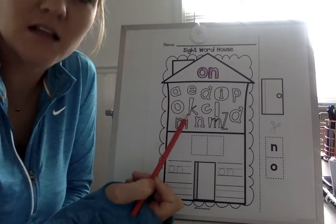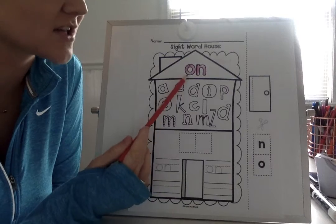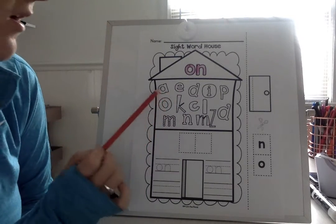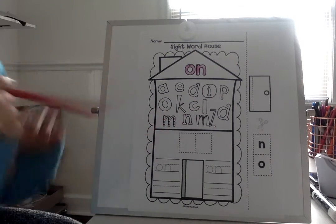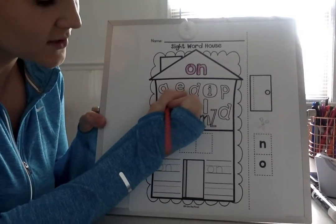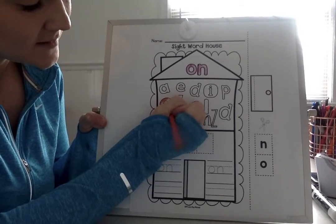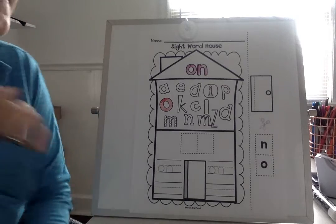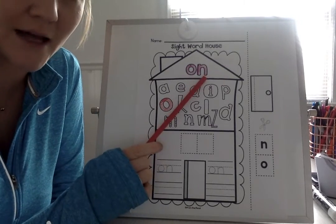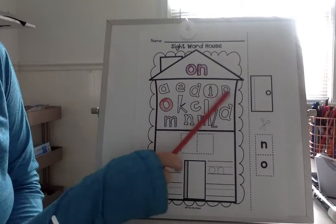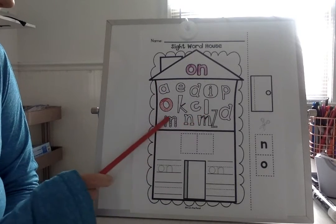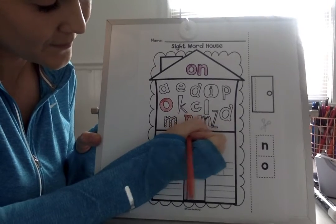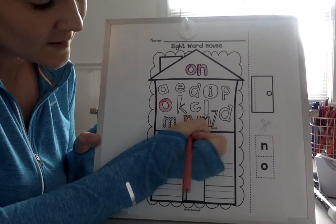Now we're going to find the letters that spell the word on. The first letter you told me was O, so I'm going to find a letter O. Where do I see a letter O? Right here. So I'm going to color in the O. Take our time, stay inside the lines. Now I'm going to find the next letter. What's the next letter in the word on? N. Very good. So now I'm going to search for the letter N — found it right here.